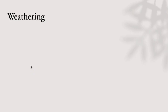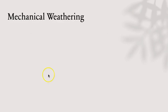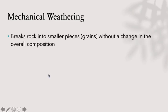Weathering is essentially the breakdown of rock and the minerals making up rocks through mechanical and chemical processes. Mechanical weathering breaks up rock into smaller pieces, called grains, without changes to the overall composition of the rock.